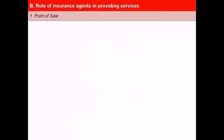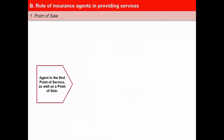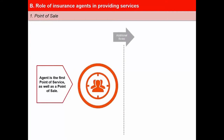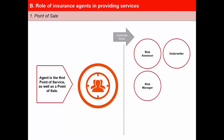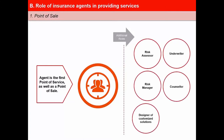First is the point of sale. The agent is the first point of service as well as a point of sale. However, the role of an insurance agent is much more than being a salesperson. He also needs to be a risk assessor, underwriter, risk manager, counselor, designer of customized solutions, and a relationship builder who thrives on building trust and long-term relationships.